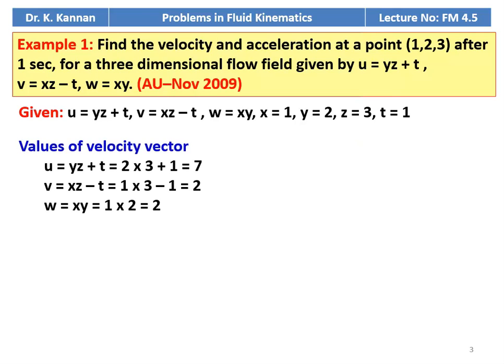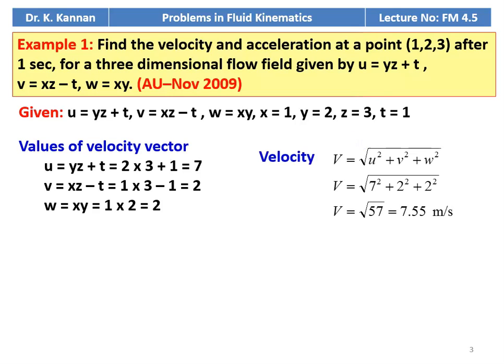The values of the velocity components: u equal to yz plus t, substituting 2 into 3 plus 1 equal to 7. V equal to xz minus t, so 1 into 3 minus 1 equal to 2. W equal to xy, that is 1 into 2 equal to 2. So the velocity magnitude v equal to square root of u square plus v square plus w square. Substituting numerical values, v equal to square root of 7 squared plus 2 squared plus 2 squared equal to square root of 57, which is 7.55.